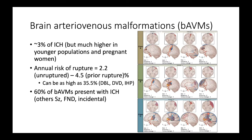Spetzler-Martin grades one or two fall into class A — surgery is very good for that category. Grade three AVMs are class B, where multi-modality therapy is recommended. Grades four and five are class C. The annual risk of rupture ranges from 2.2 to 4.5% from natural history studies (from the Aruba study). The Columbia group showed that deep brain location, deep venous drainage, and an initial hemorrhagic presentation combined can have an aggressive natural history with an annual rupture risk of close to 36%.